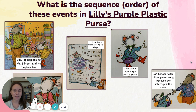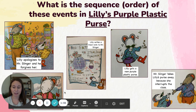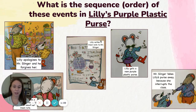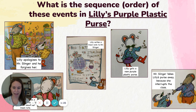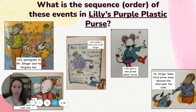Let's think about the order of these events, or the sequence of these events, in Lily's Purple Plastic Purse. Let's take a look at some of the events we have here. Here's a picture of Lily apologizing to Mr. Slinger and him forgiving her. Lily writes a mean note to Mr. Slinger. Lily gets a nice note from Mr. Slinger and then feels bad about her mean note. Lily gets a new purple plastic purse, and Mr. Slinger takes Lily's purse away because she interrupts the class. These are five different important parts of the plot, but right now they're not in order. So I'm going to think about which one comes first, and then tell the rest of them in order after that. That will help me understand this story much better.